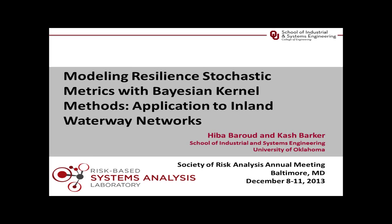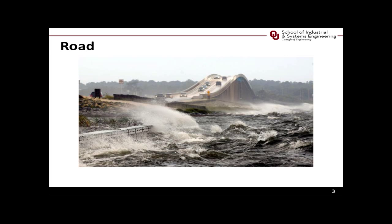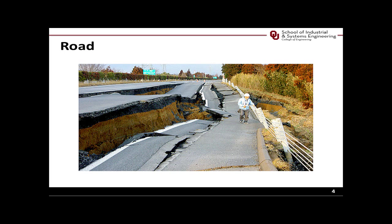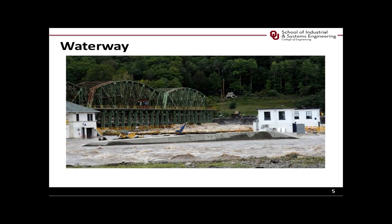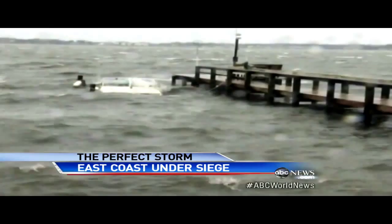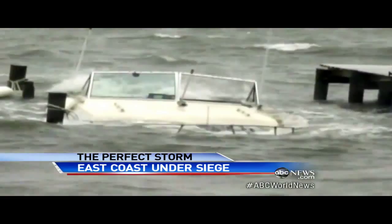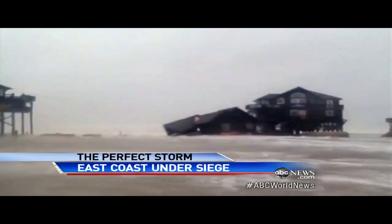Critical infrastructure systems, such as transportation systems, have been vulnerable in the past decade to numerous disruptive events, including accidents, natural disasters, and man-made attacks. For example, Hurricane Sandy left areas of the highly populated East Coast without electric power, communication, and mass transit systems for several days.